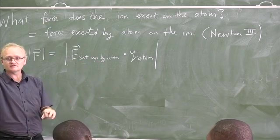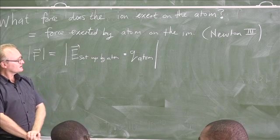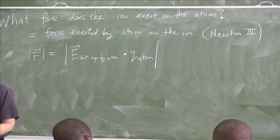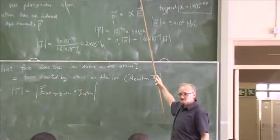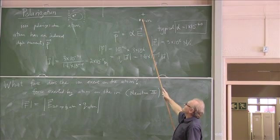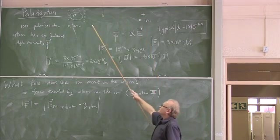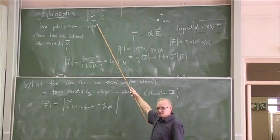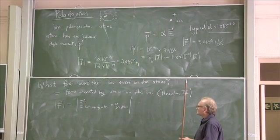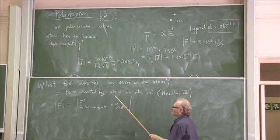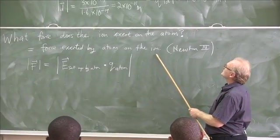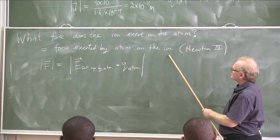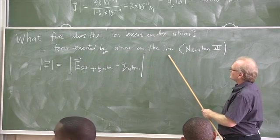What is the electric field set up by the ion — not the electric field set up by the atom? The ion will feel a force from the electric field set up by the atom, so the force should be the charge of the ion. The force exerted by the atom on the ion would be the charge of the ion times the electric field set up by the atom.